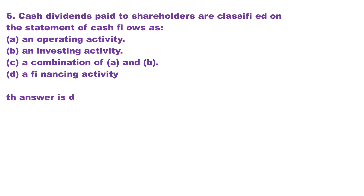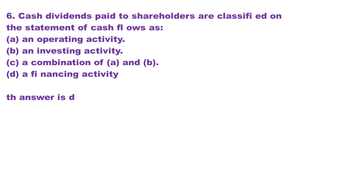Question 6. Cash dividends paid to shareholders are classified on the statement of cash flows as: A. An operating activity. B. An investing activity. C. A combination of A and B. D. A financing activity. The answer is choice D.